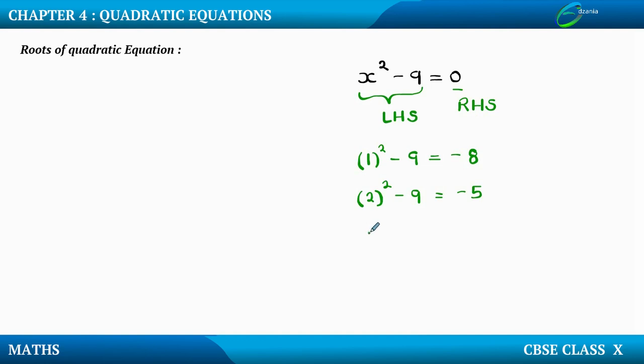Let me move further. Suppose if I substitute 3. I get 3² - 9. Now 3² is 9 itself and 9 - 9 is 0. So this time yes, we are getting the RHS part.